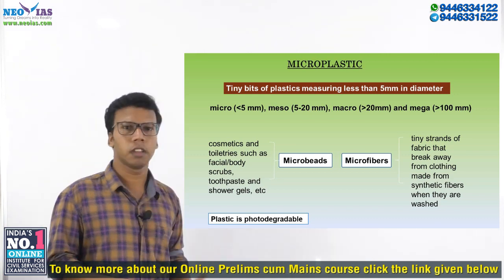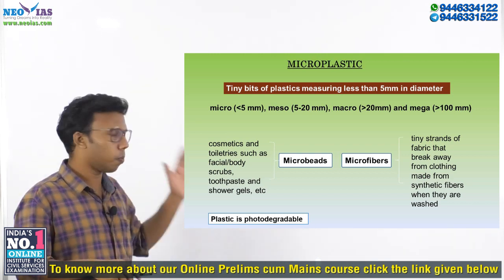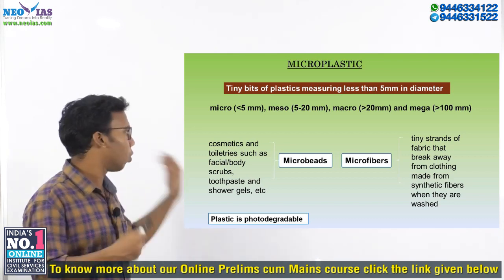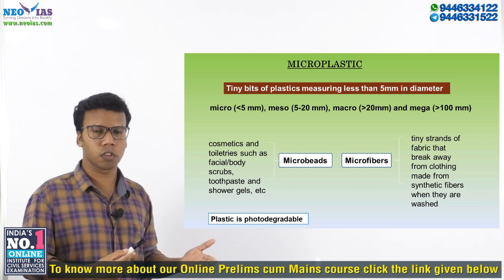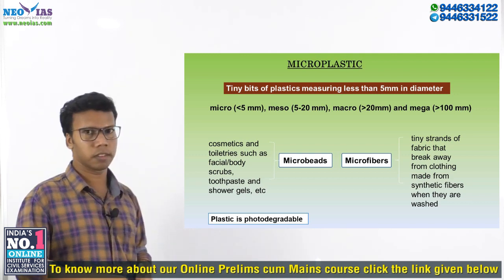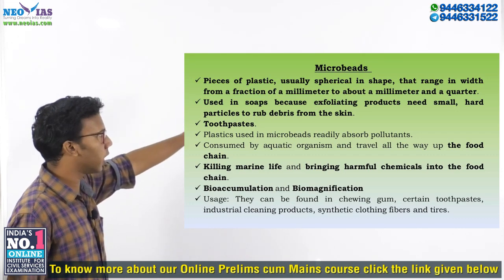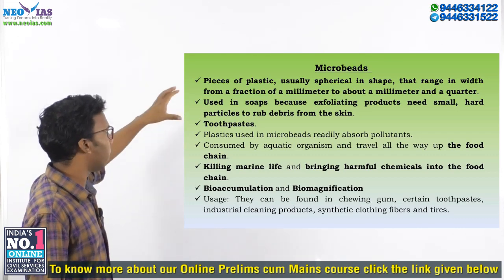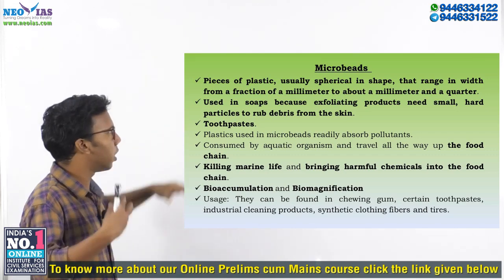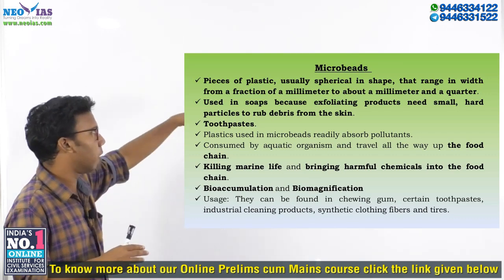Microbeads and microfibers are two types of microplastics made by humans, and microplastics are also made by natural means through the photo degradation process. Microbeads are pieces of plastic, usually spherical in shape, that range in width from a fraction of a millimeter to about a millimeter and a quarter — so they are around one millimeter in size.